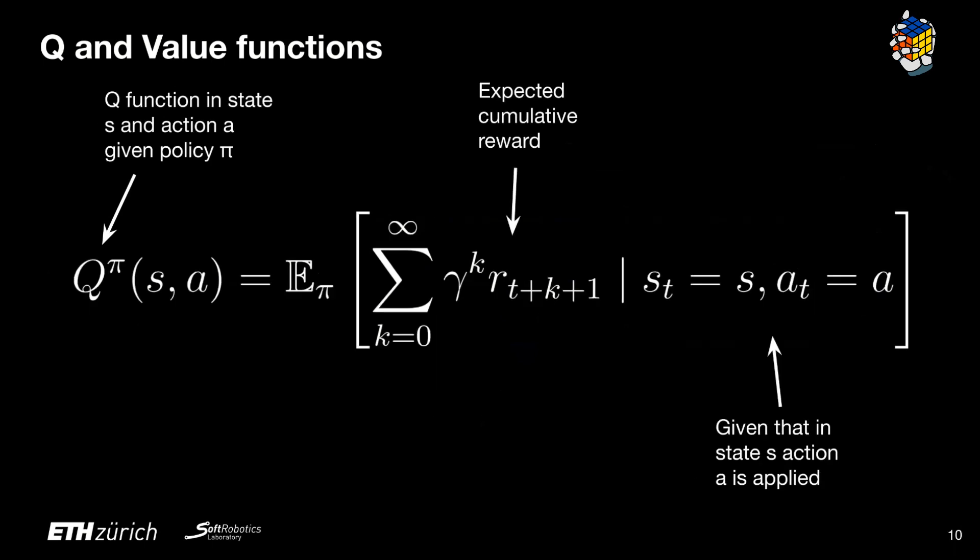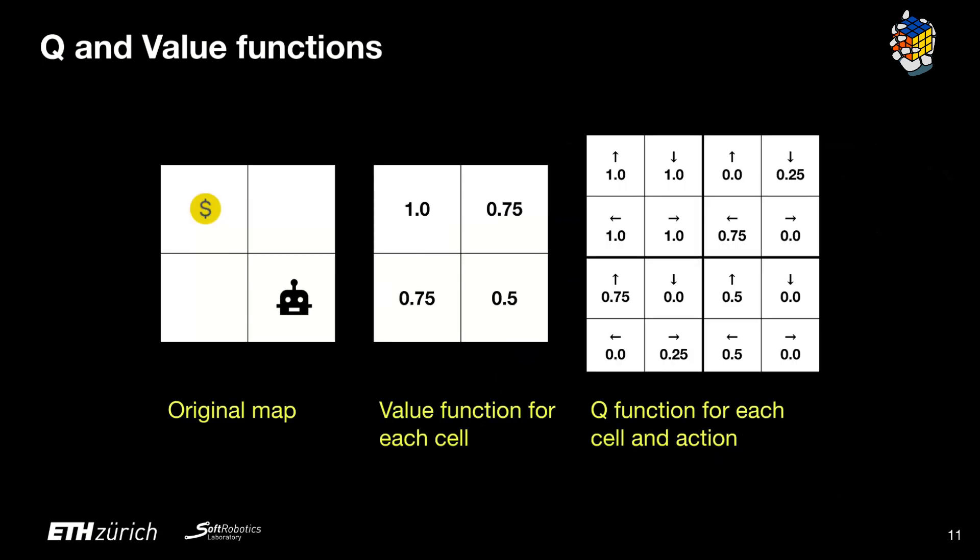On the other hand, the Q function also describes the expected cumulative reward from state s, but this time it also depends on the action a that the agent performs in state s. When we compare it with the value function at the same state, it gives us some understanding of how good one action is compared to all the other possible actions. The value function tells us how good a state is considering all the possible outcomes for each action, while the Q function gives us an intuition on which action is the optimal one given a current state.